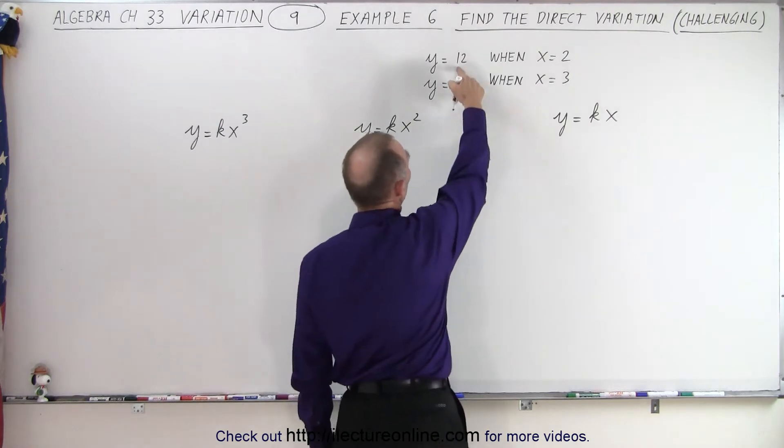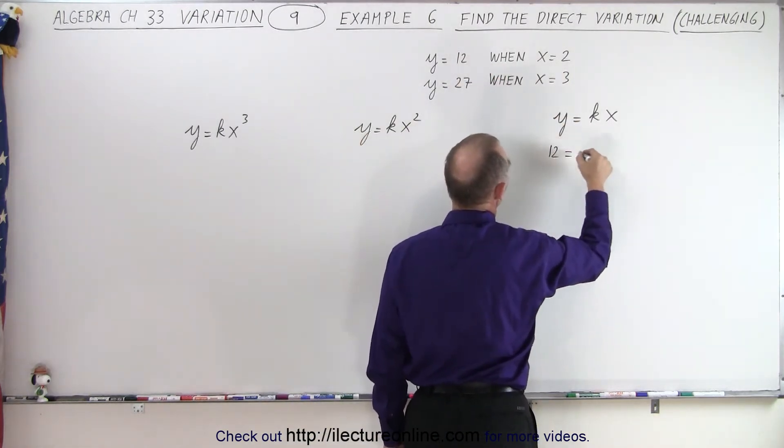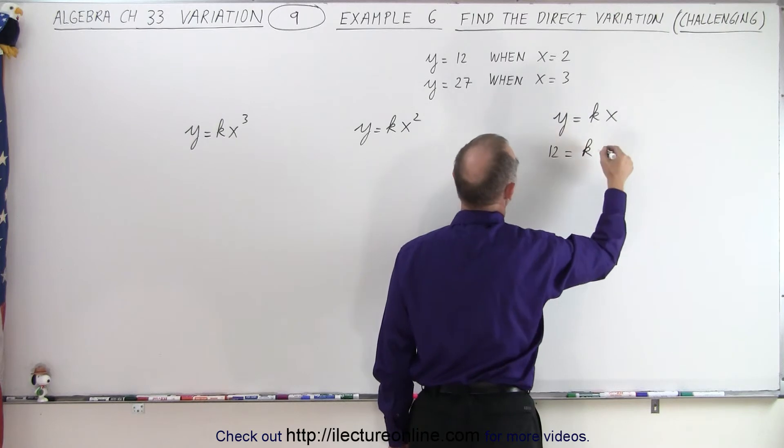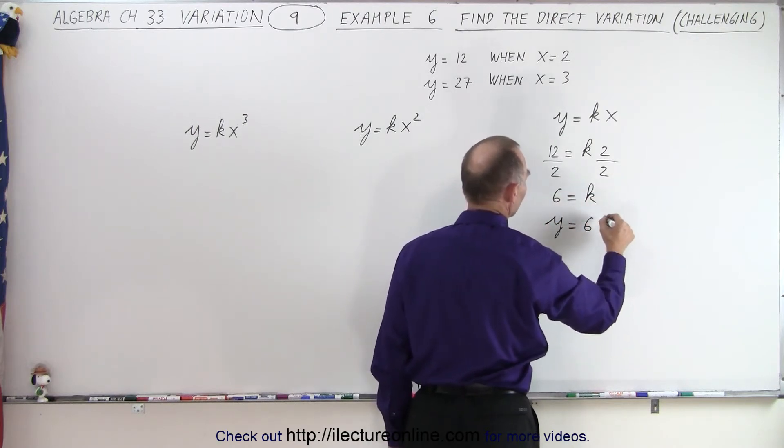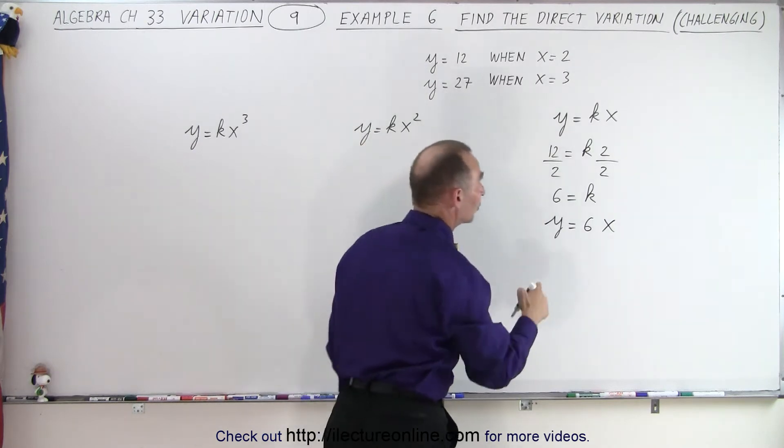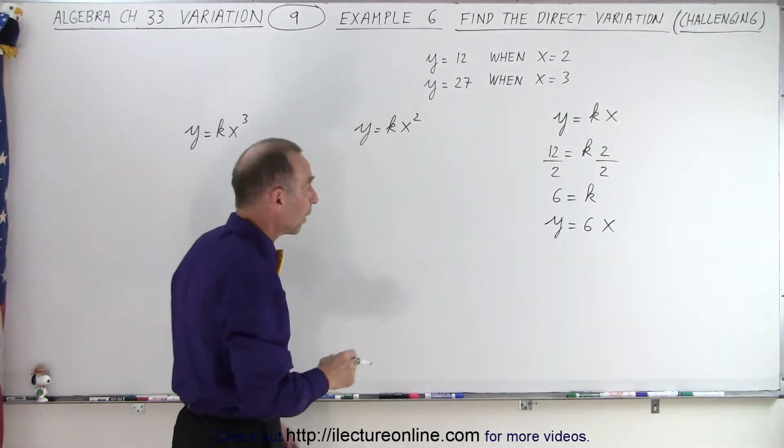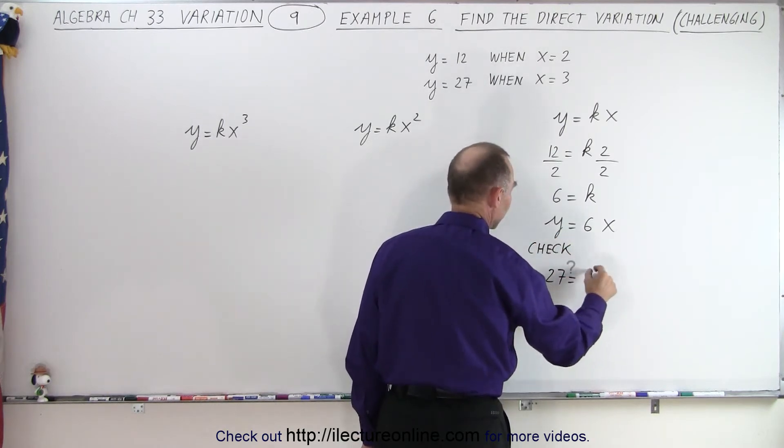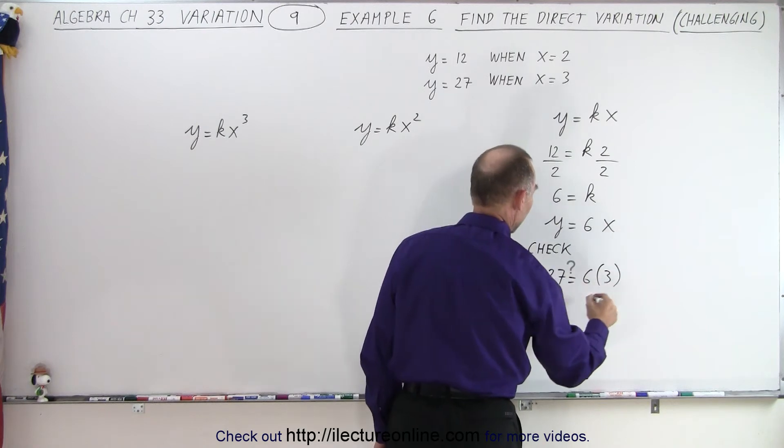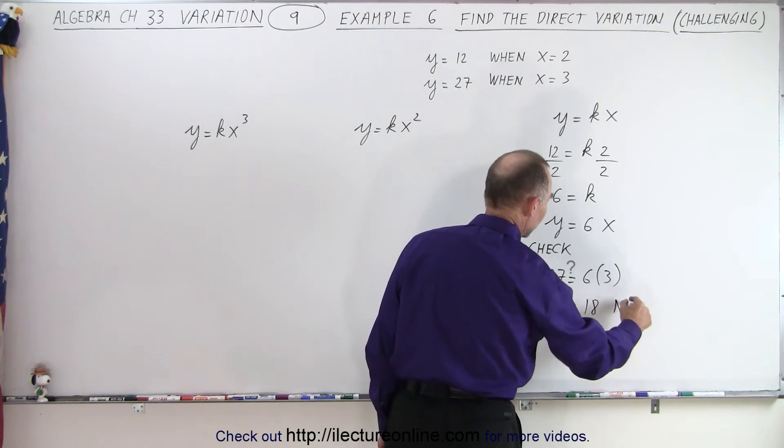So first of all, we need to find the value for k, assuming that we have y is equal to the direct variation of x. To do that, we plug in the values 12 and 2, so y equals 12 equals k times x, which is equal to 2. Divide both sides by 2, we get 6 is equal to k, so we end up with y equals 6x. Now we plug in the other two values to see if we get the right equation. So we have y, which is equal to 27, equals 6 times x, which is 3, and of course 27 equals 18, and that is of course not true, so therefore that is not the right equation.